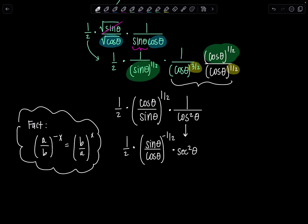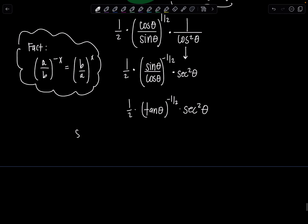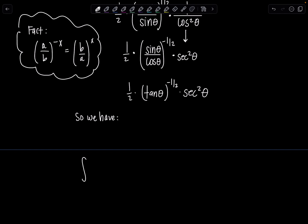Let me rewrite this. So we have one half, this is tangent theta to the negative one half and secant squared theta. And this is something now I can integrate for sure. So let me rewrite everything all together from the original integral with our limits of integration. The limits were from pi over four to pi over three and then I have one half tangent theta to the negative one half times secant squared theta d theta.